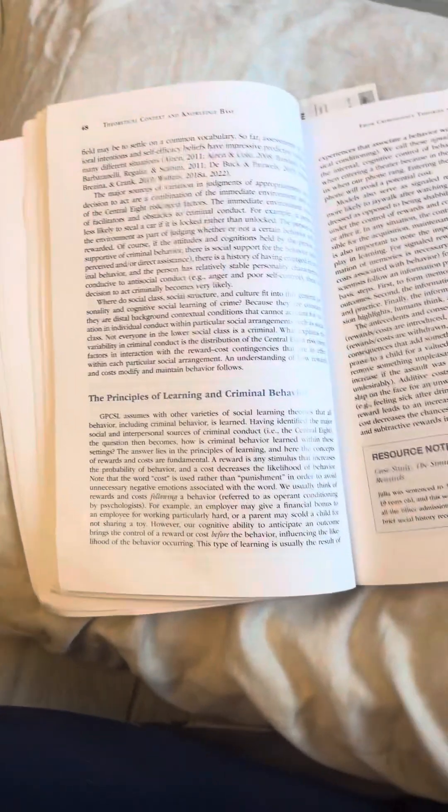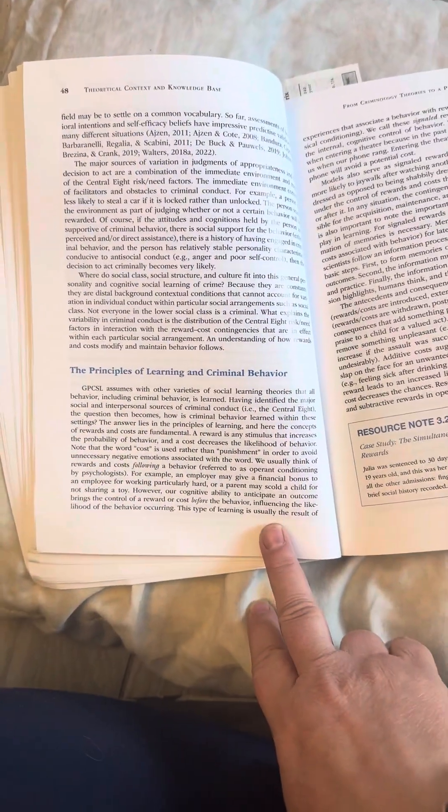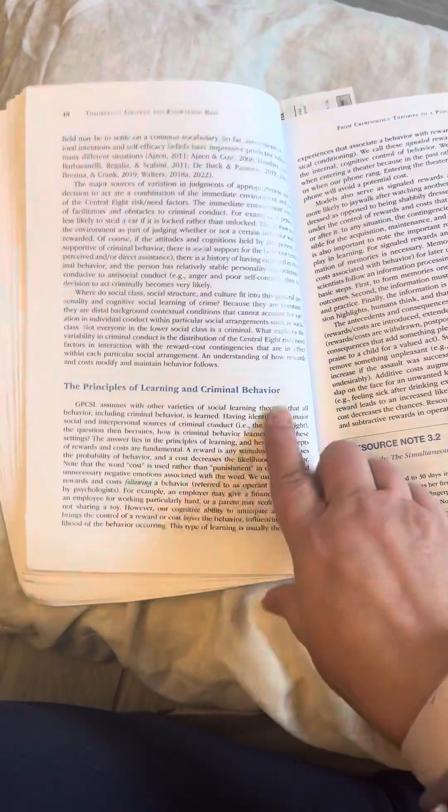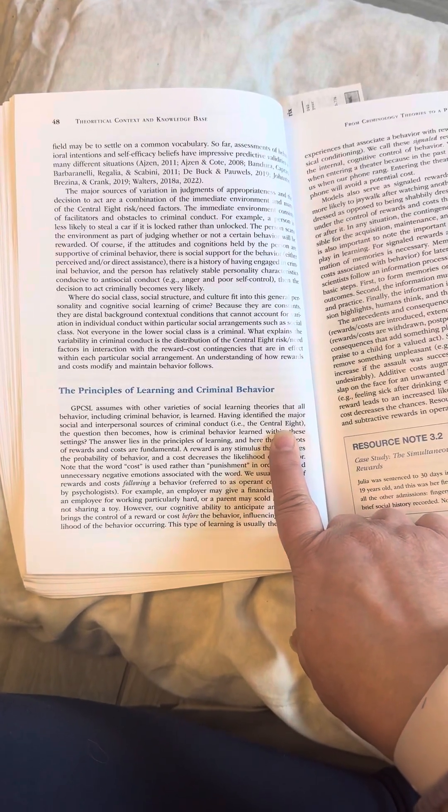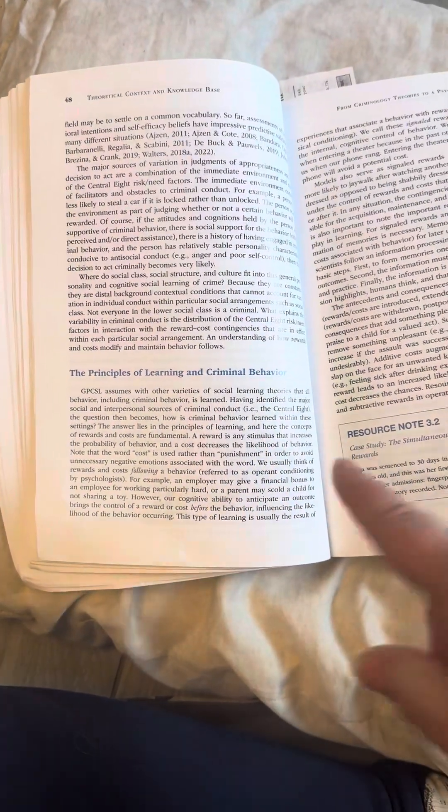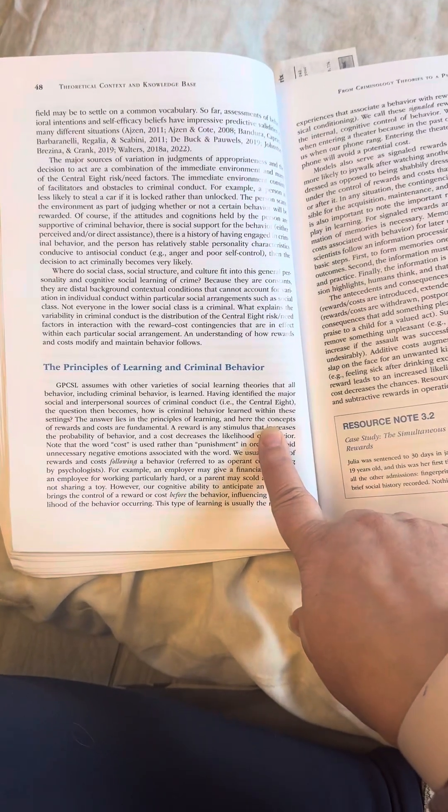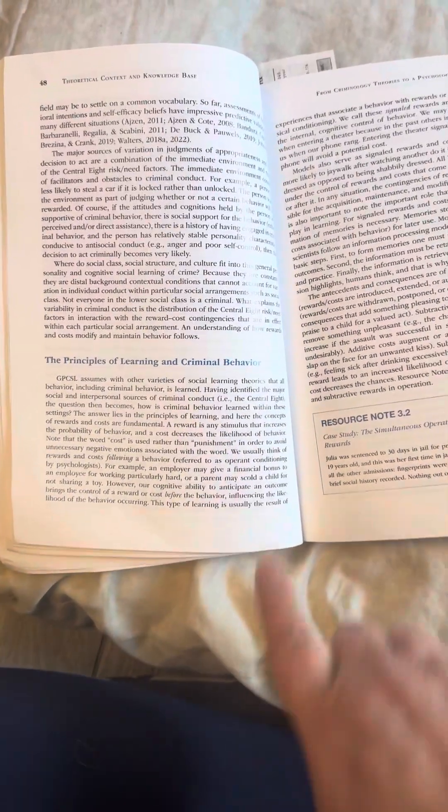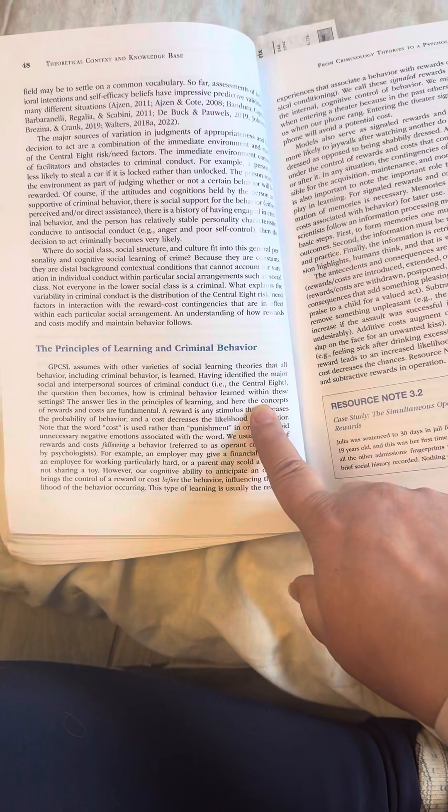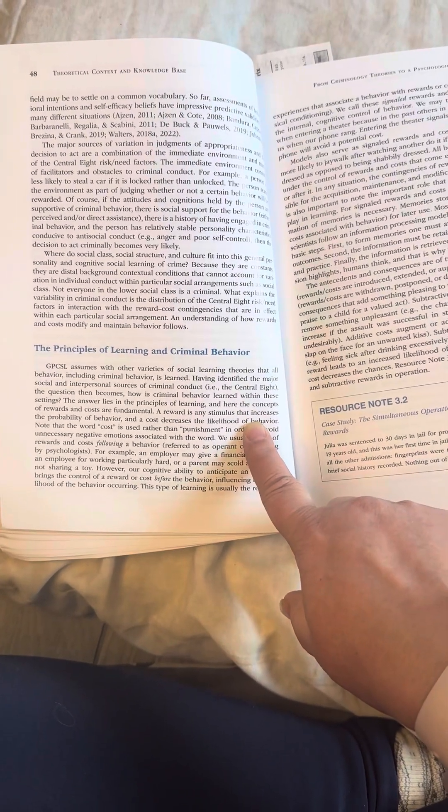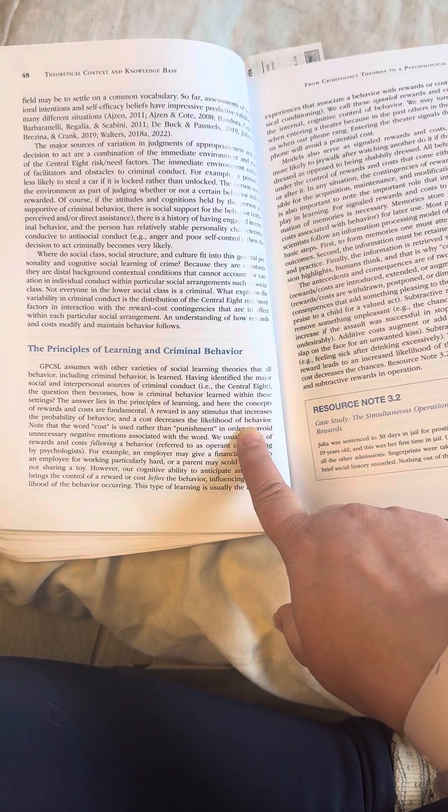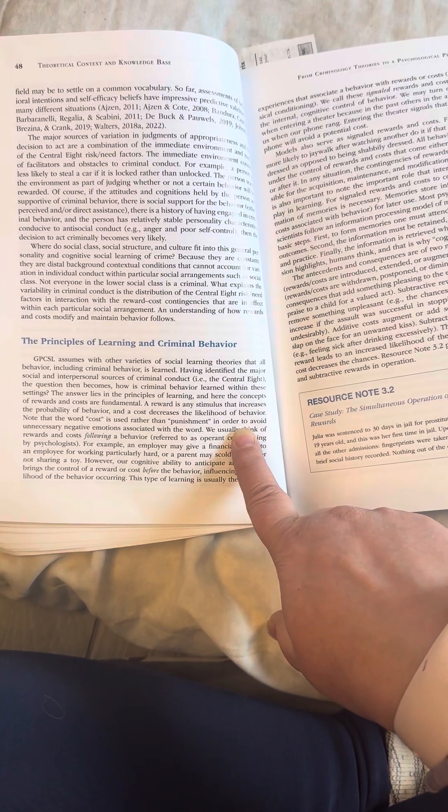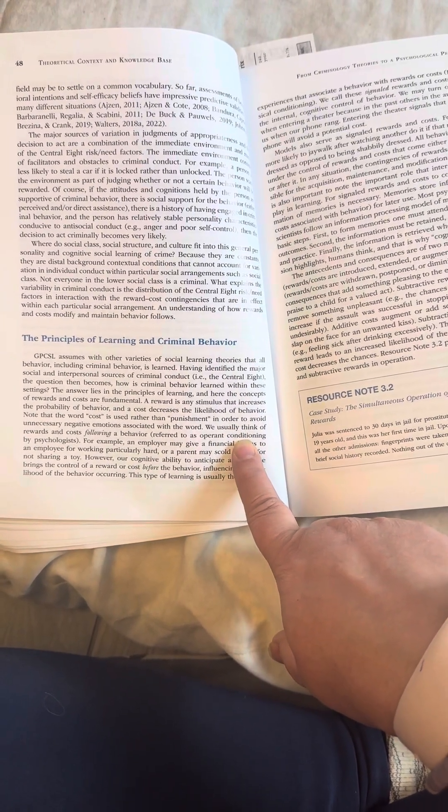The principles of learning and criminal behavior. GPCSL with other varieties of social learning theories that all behavior including criminal behavior is learned. Having identified the major social and interpersonal sources of criminal conduct, i.e., the central eight, the question then becomes how is criminal behavior learned within these settings? The answer lies in the principles of learning and here are the concepts of rewards and costs are fundamental. A reward is any stimulus that increases the probability of behavior and a cost decreases the likelihood of behavior.